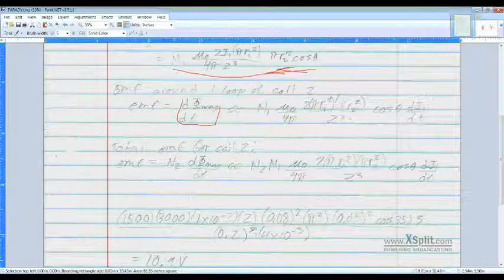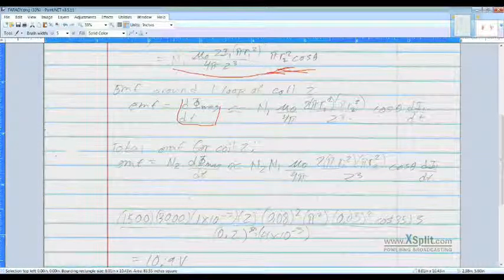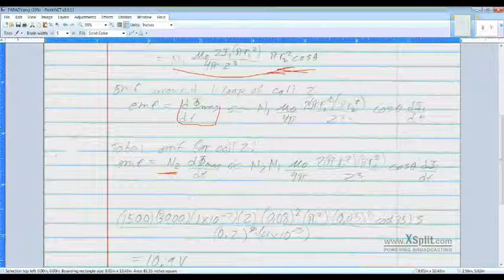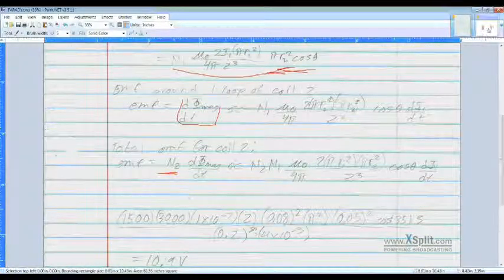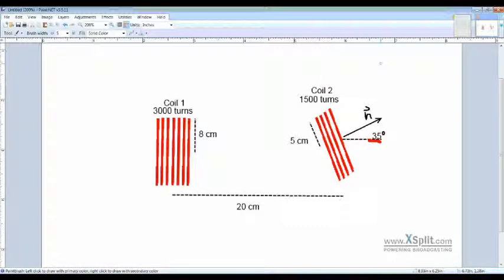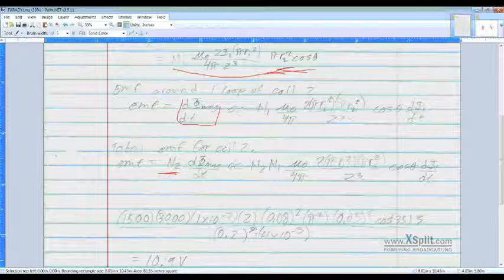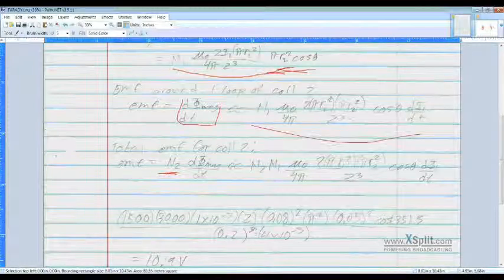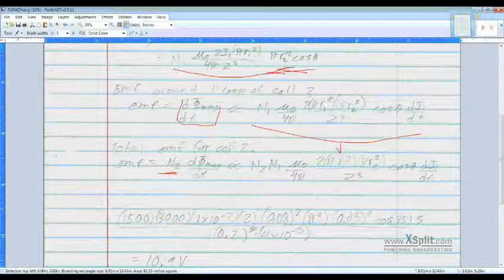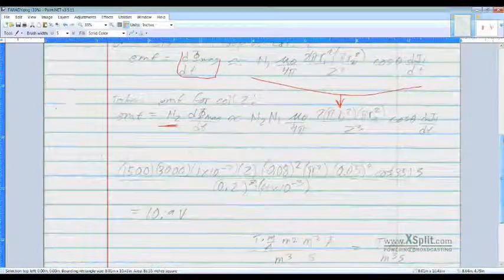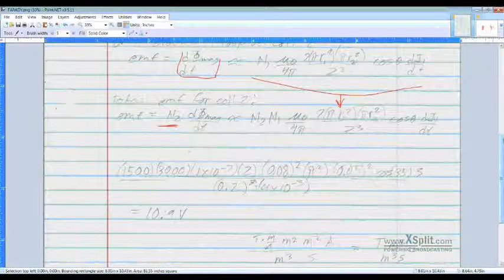So the total EMF for coil 2, all we need to do is multiply by that N2. So that's how many turns are on this coil here. And we'll get N2 times that whole equation there.